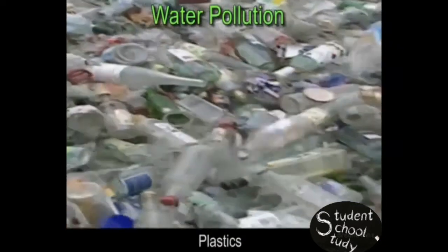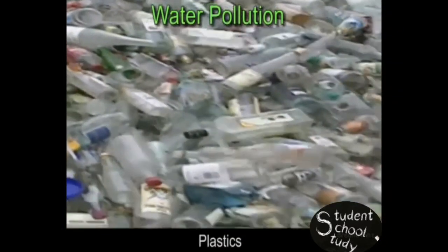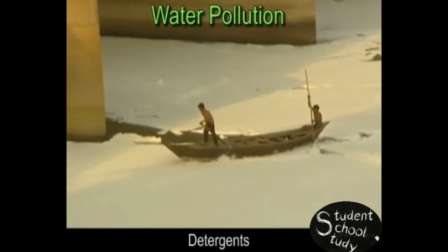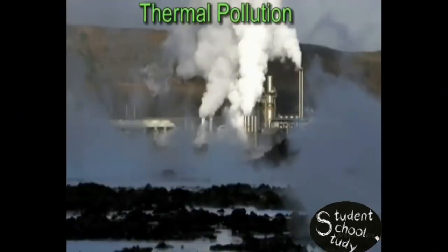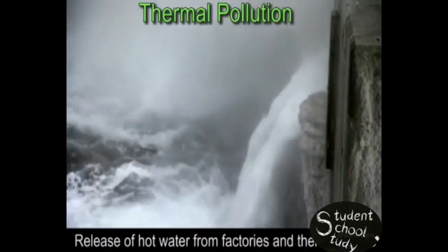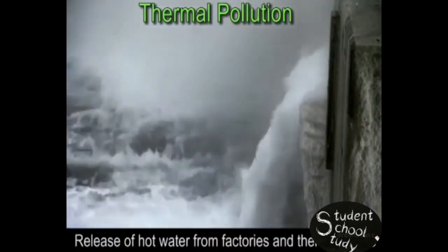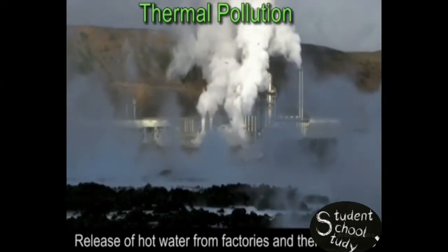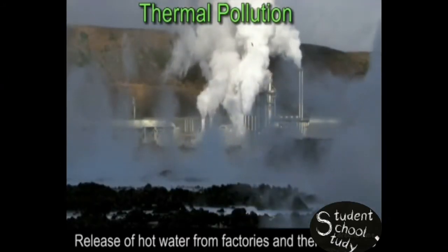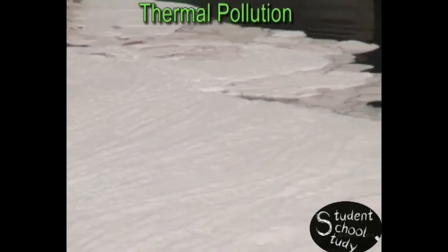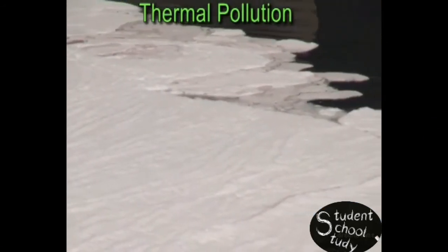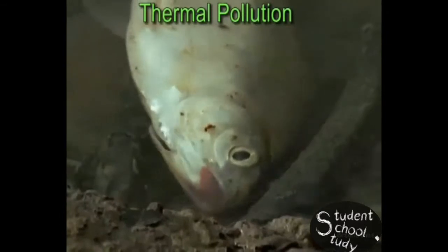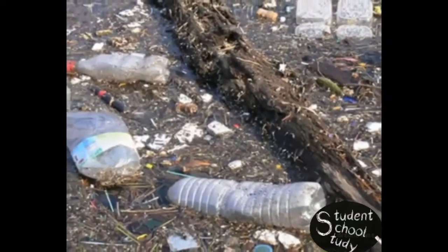Such waste includes plastics, acids, detergents, and so on. Thermal pollution: the release of hot water from factories and thermal plants into rivers and ponds causes thermal pollution. Such harmful discharge from factories affects aquatic life. Also, rainwater when it gets into the soil carrying harmful chemicals causes groundwater contamination.